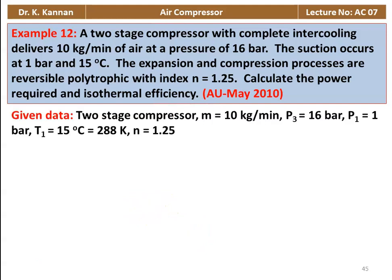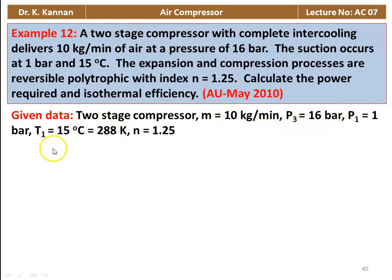Given data: two-stage compressor. Mass of air = 10 kg/min. Delivery pressure = 16 bar. Suction pressure = 1 bar. Suction temperature = 15°C = 288 K. Polytropic index n = 1.25.